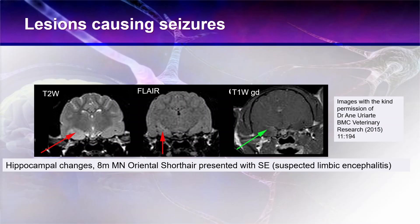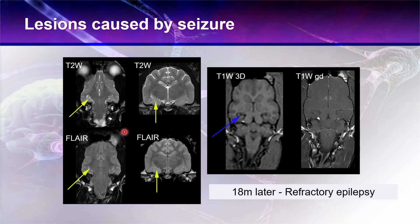I then inherited this cat after Anna had given it very appropriate treatment for limbic encephalitis, including steroids and anti-epilepsy drugs — which is the subject of a future lecture. We repeated the MRI scans 18 months later because the cat had refractory epilepsy. We can now see that there have been some permanent changes caused by the ongoing encephalitis and probably the seizures. There is now atrophy of the temporal lobe, and we can still see some changes on the FLAIR, but it's not quite as distinct.